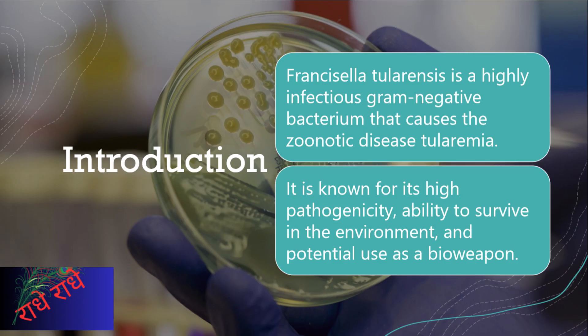Francisella tularensis is a type of bacteria that can cause a disease called tularemia. This bacterium is highly infectious and can be spread through contact with infected animals, contaminated water or soil, or through insect bites. Tularemia can cause symptoms such as fever, headache, muscle aches, and swollen lymph nodes. In severe cases, it can lead to pneumonia or other serious complications. Because of its high pathogenicity and potential use as a bioweapon, it is important to take precautions to avoid exposure and seek medical attention if you suspect you have been infected.